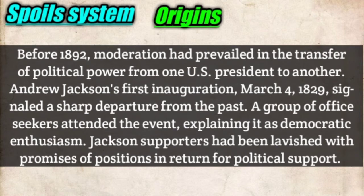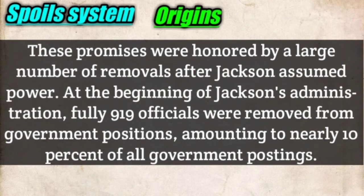Before 1892, modernization had prevailed in the transfer of political power from one US president to another. Andrew Jackson's first inauguration on March 4, 1829, signaled a sharp departure from the past. A group of office seekers attended the event, explaining it as democratic enthusiasm. Jackson's supporters had been lavished with promises of positions in return for political support, and these promises were honored by a large number of removals after Jackson assumed power.